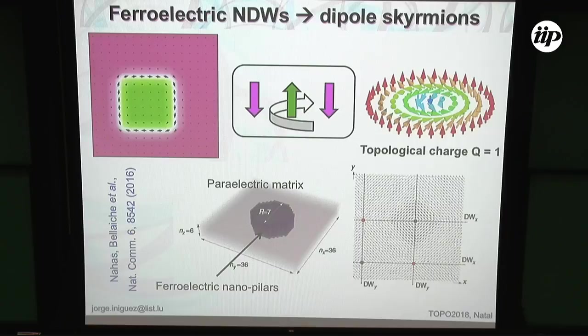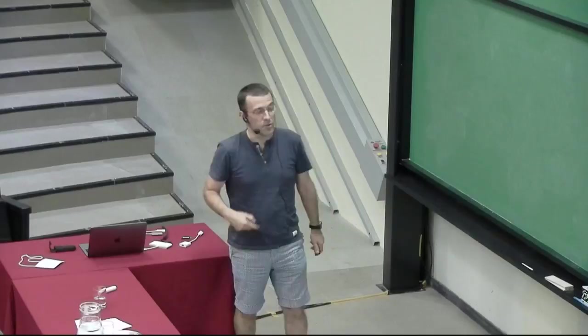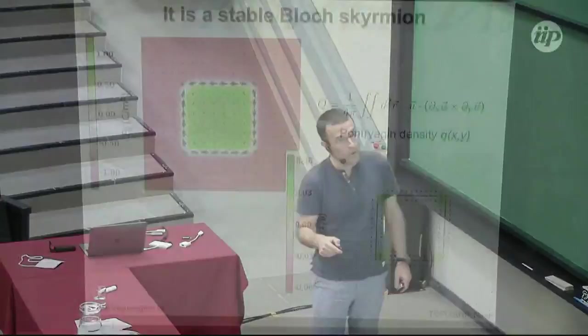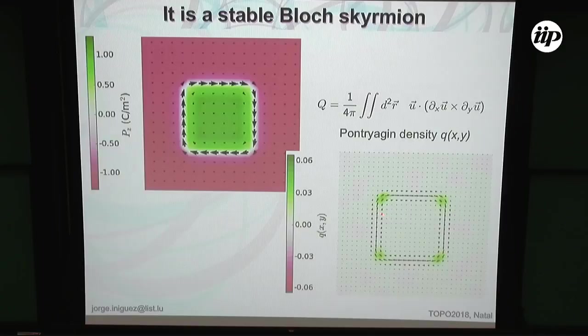The difference is that there you have to do it in a nanopillar of a ferroelectric embedded in a paraelectric, while here we can do it in a ferroelectric where we write a nanodomain — which is obviously a great advantage and much easier to fabricate. Eventually these nanodomains may move. To confirm it's a skyrmion, we computed the Pontryagin density, which appeared yesterday in a number of talks. You only have pockets of finite density at the corners of the nanodomain. When you integrate using the appropriate normalized polarization field, you get Q equal one. So yes, this is a skyrmion.